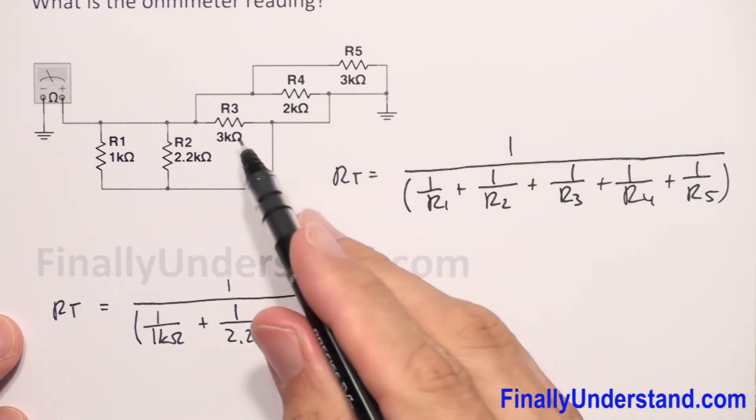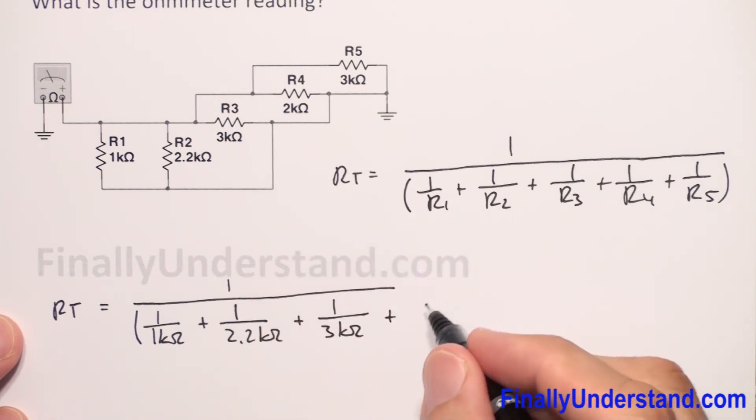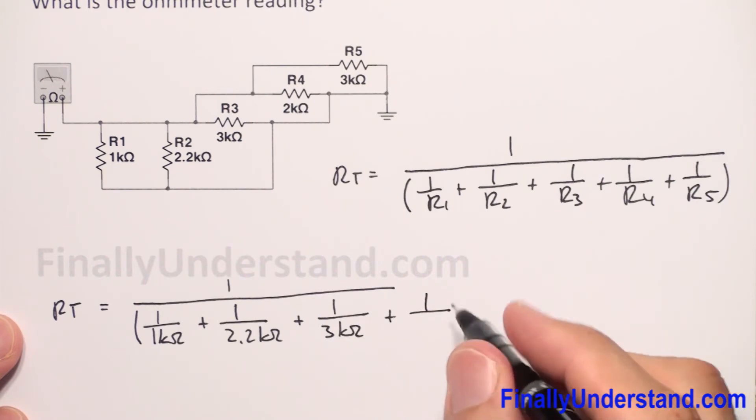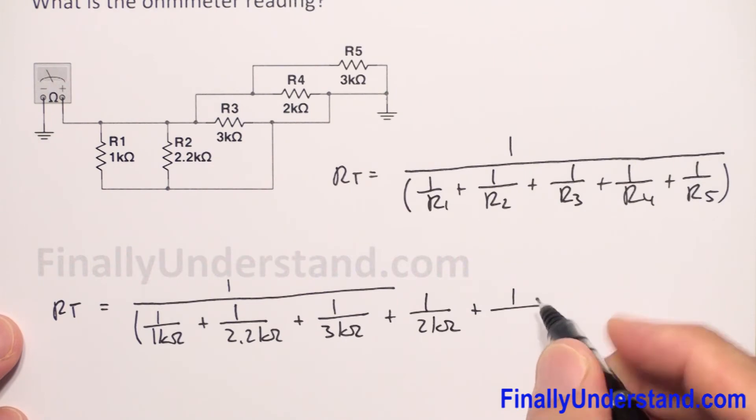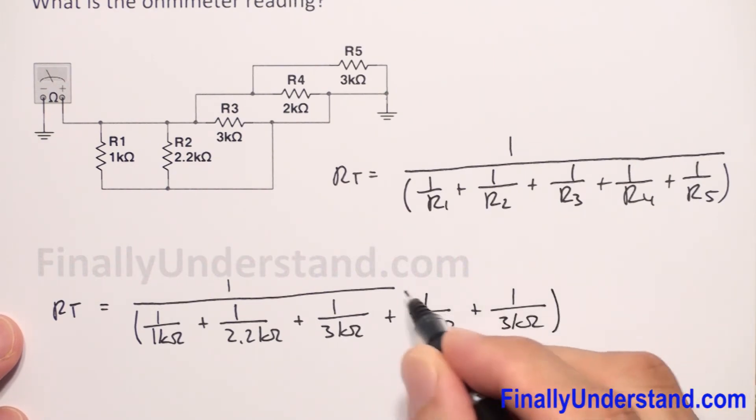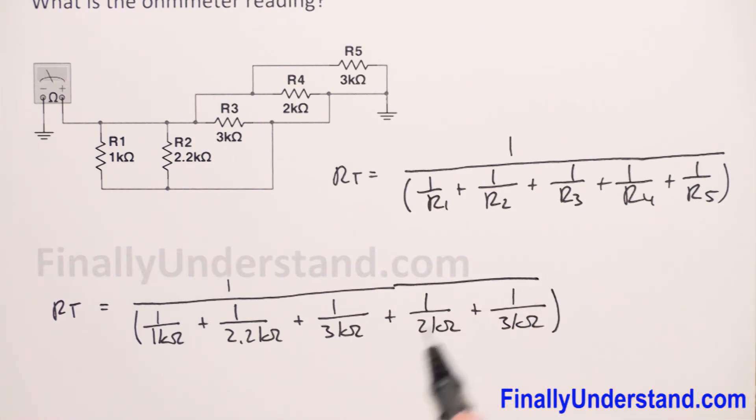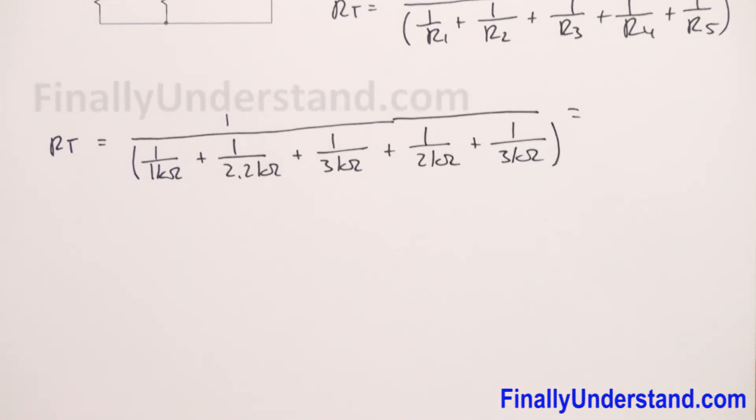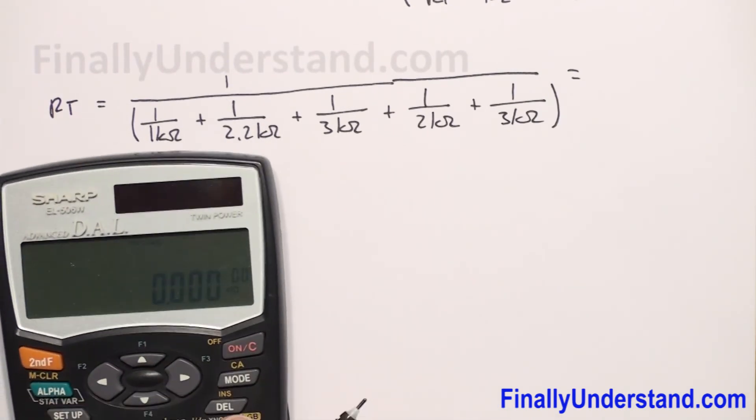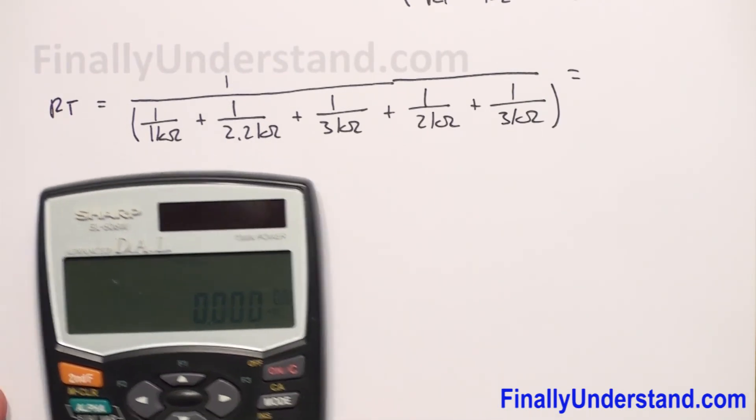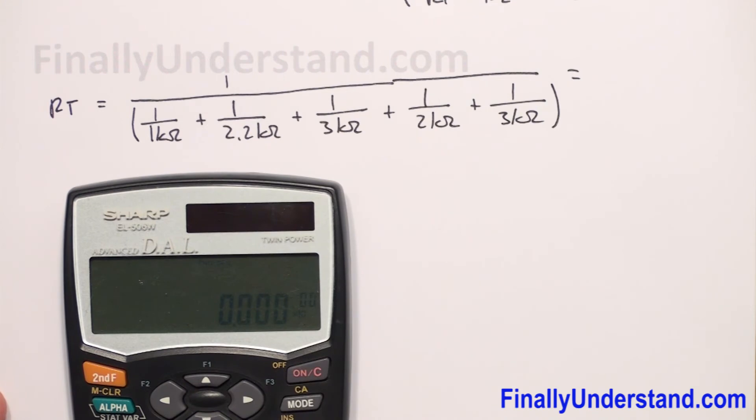That's 1 over 1 kilo-ohm plus 1 over 2.2 kilo-ohms plus 1 over 3 kilo-ohms plus 1 over 2 kilo-ohms plus 1 over 3 kilo-ohms. So now I'm going to use the calculator.